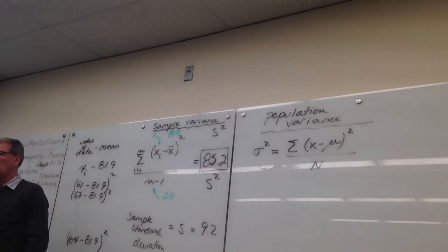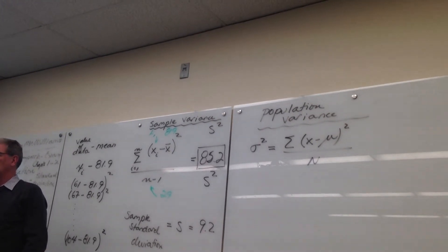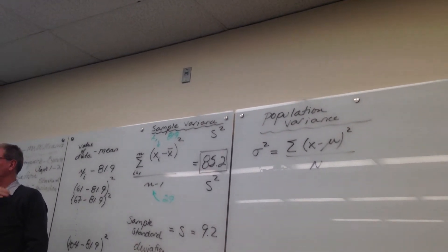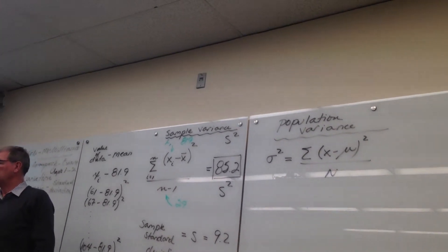Question. So why do I divide by n minus 1, then, for the sample? Anybody have any idea?